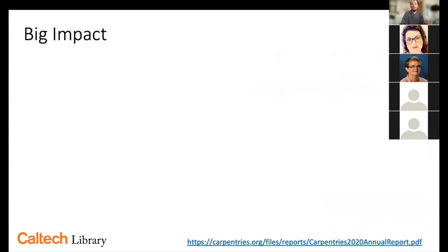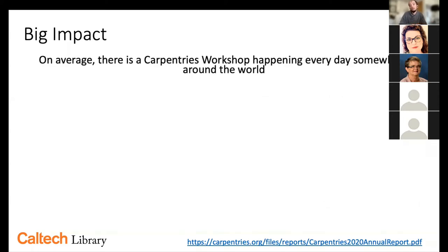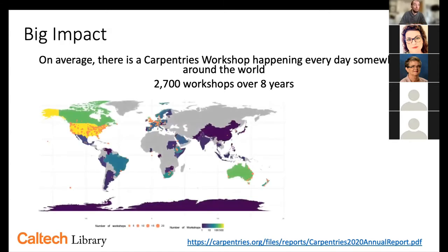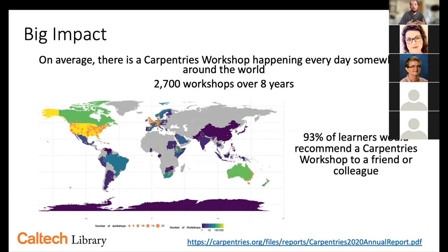Why do we care about this? Because it's had a huge impact. On average, a Carpentry workshop happens every single day somewhere around the world — 2,700 workshops over eight years, globally, with a higher proportion in the US, Europe, and Australia. Using after-action feedback reports, the Carpentries found that 93% of learners would recommend a workshop to a friend or colleague. That's an extremely high promoter score, showing researchers greatly appreciate this type of targeted instruction.